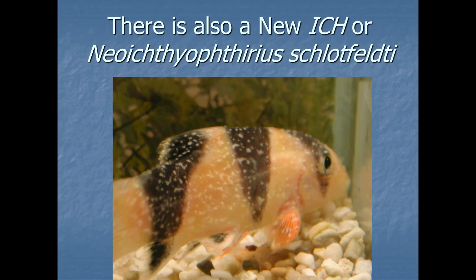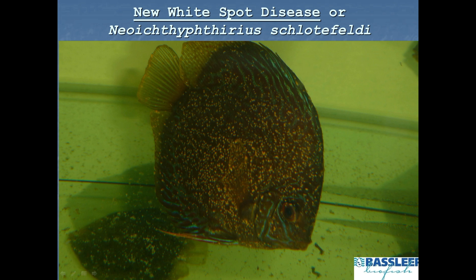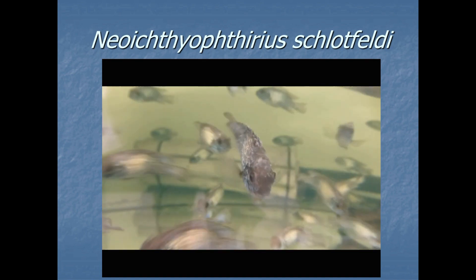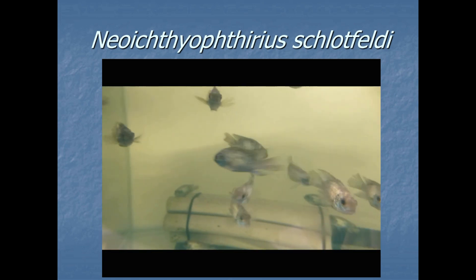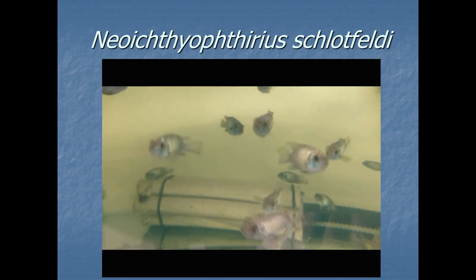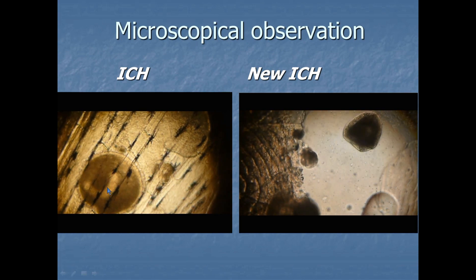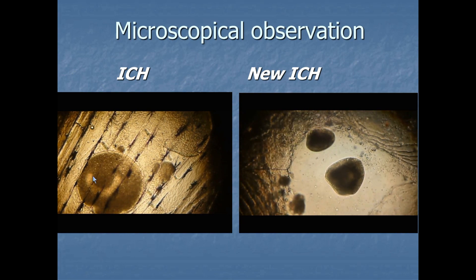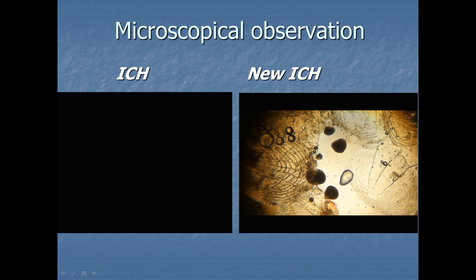Check your fish daily on their behavior. There is also a new ick, Neoichthyophthirius Schlotfeldt. It looks different — smeary, yellowish white spots, here on the ram. They look larger, here massively on a discus, yellowish, covering the whole body of the fish. And Neoichthyophthirius Schlotfeldt here on Jack Dempsey's — you see the yellowish, whitish spots covering the body and causing damage to the cichlid. Here the new ick on a loricaridae, completely covered with the new white spots. In the microscope, we can distinguish the typical U-nucleus shape in normal Ichthyophthirius, while the Neoichthyophthirius has a different body — it is darker and has a different form, so they look quite different. A microscope is the best way to show this.